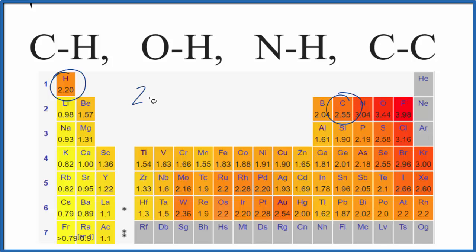So carbon 2.55 minus 2.20 for the hydrogen we get 0.35. So in this case we would have a dipole, but usually when we're talking about a polar bond we consider it to be above 0.5 or sometimes 0.4. So we could consider this to be a nonpolar bond, but there would be a little bit of a dipole.